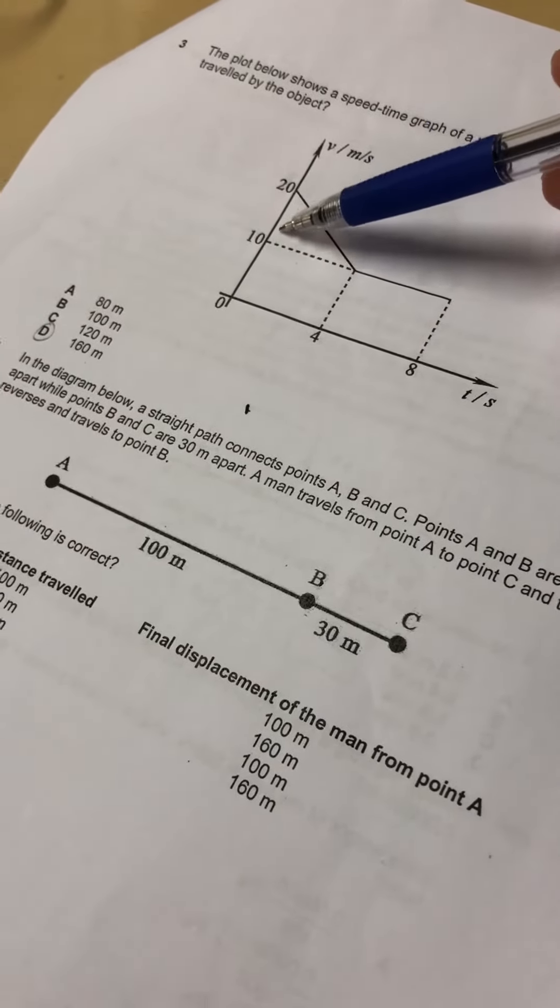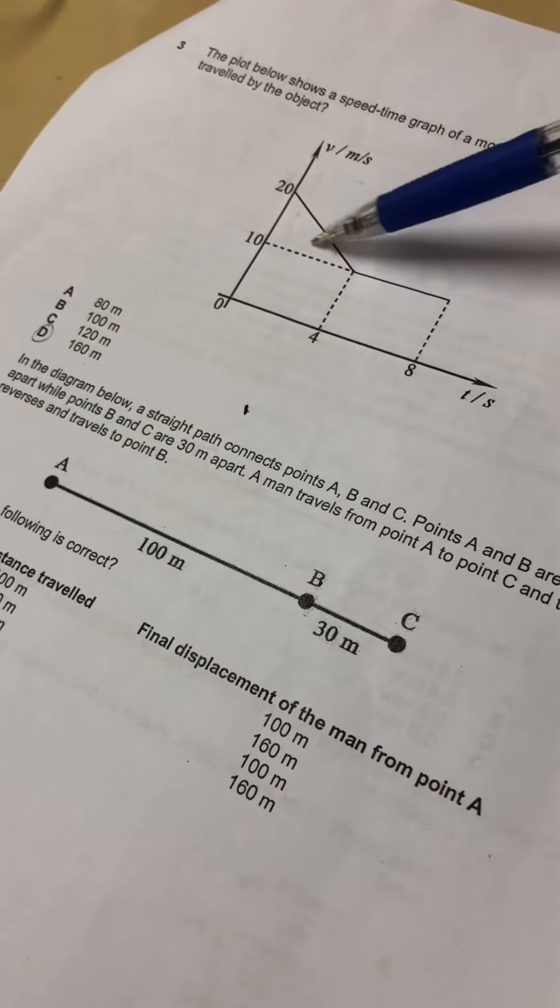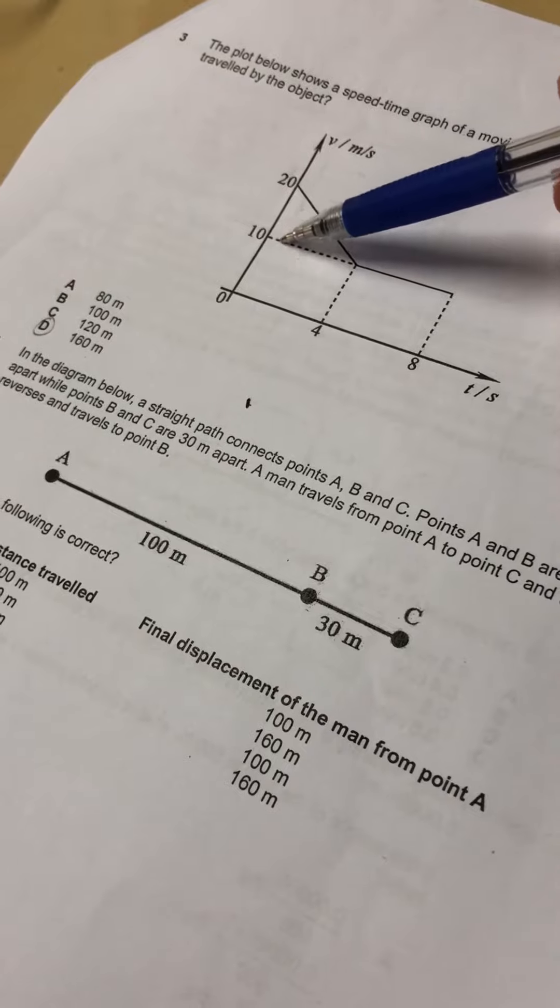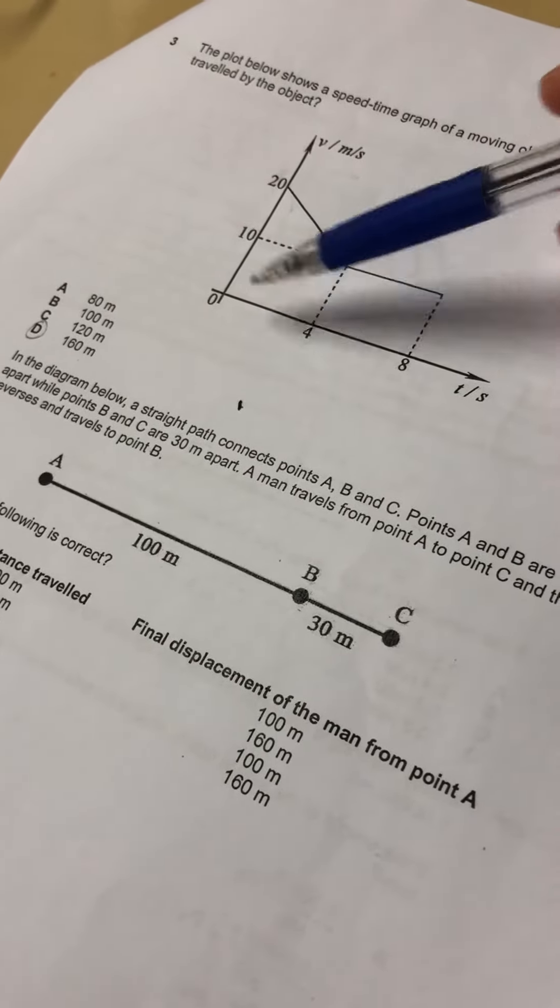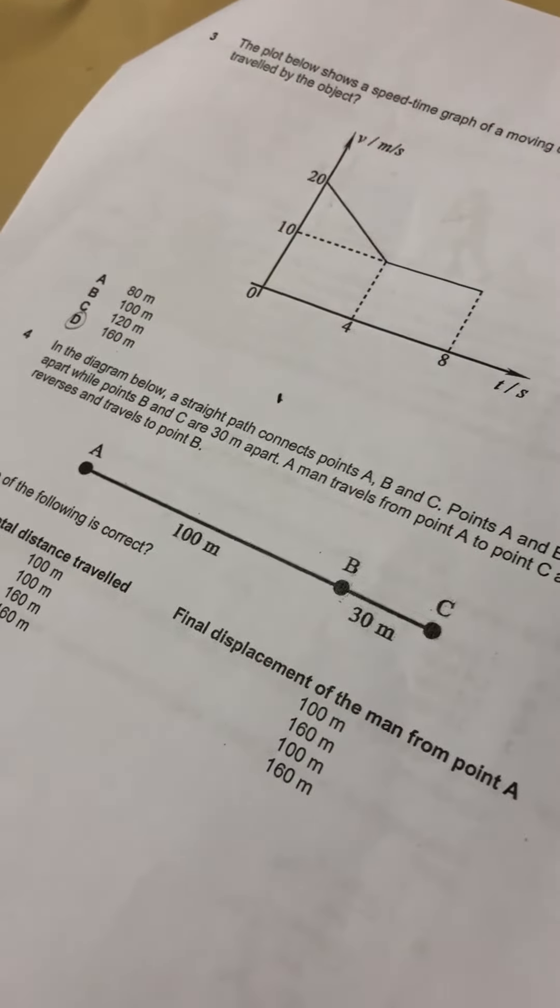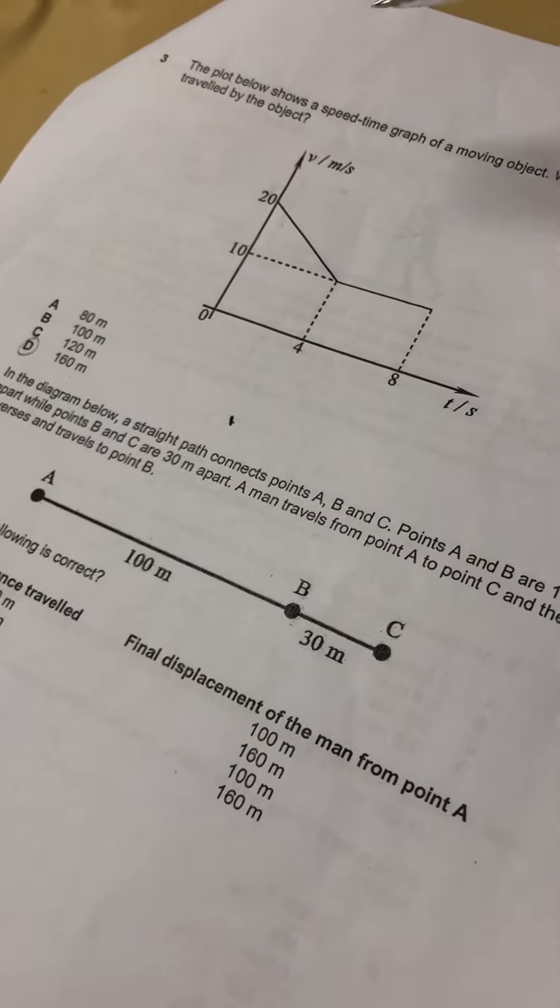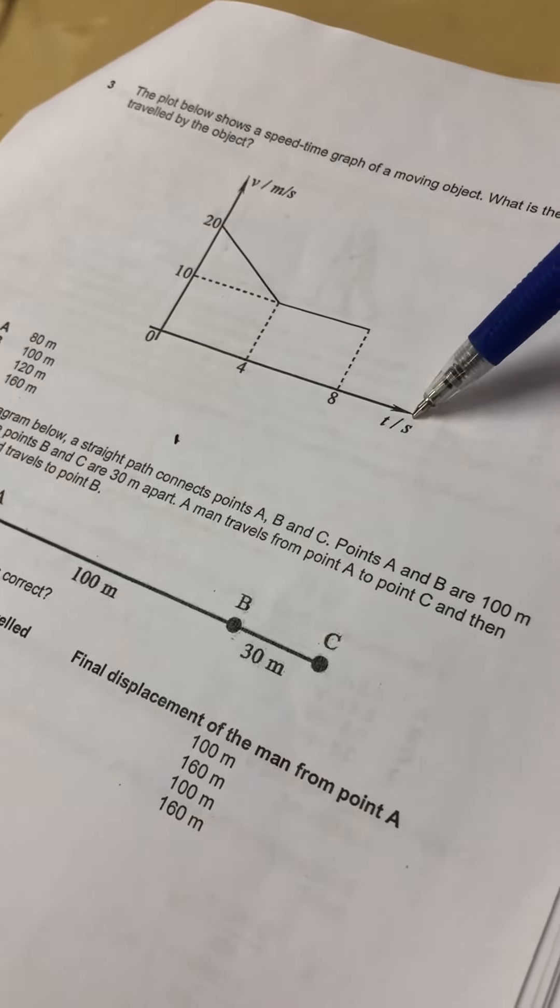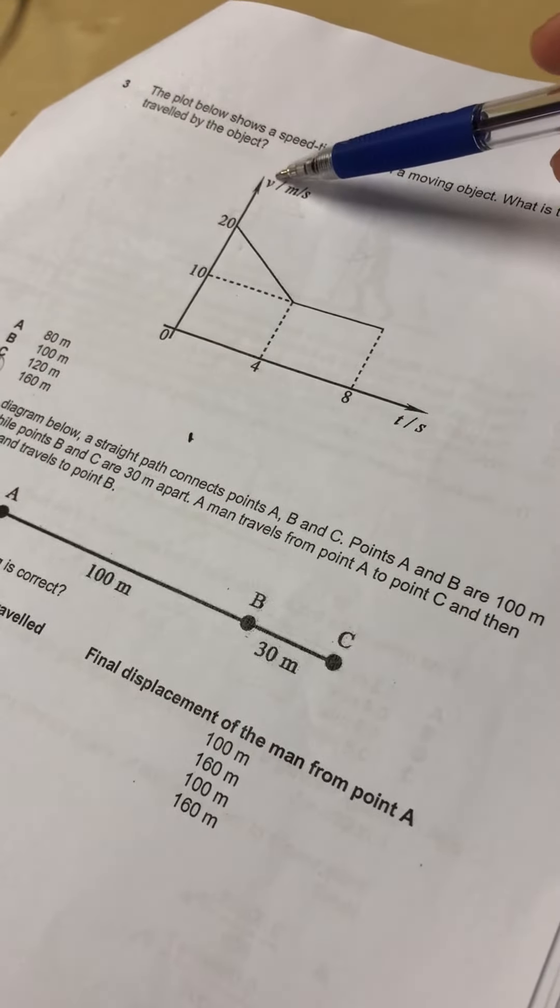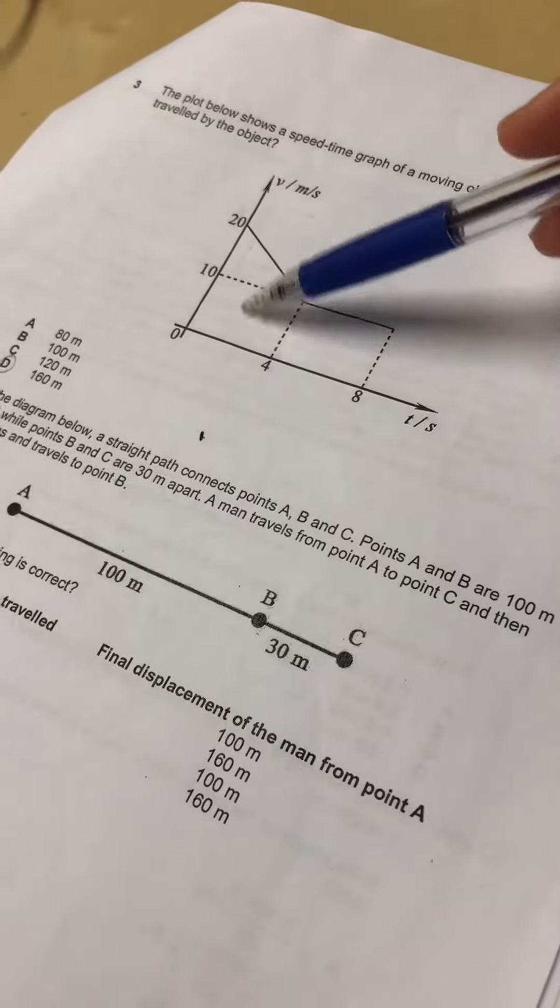Right, so the area here - this is a triangle - so you find the area of this triangle, which is half times base times height. And then this is a big rectangle, so it's eight times ten. Okay, so that is how you find the distance, because this is a speed-time graph, right? So you take speed times time to find the distance.